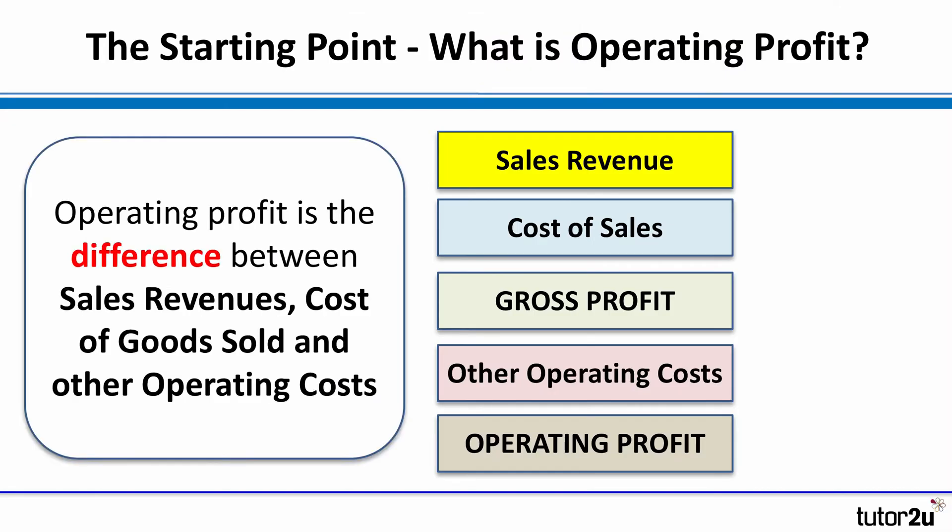Operating profit is the difference not just between the sales revenue and the cost of sales, which is the gross profit, but also after taking account of the other operating costs of the business, such as marketing or rent and rates.